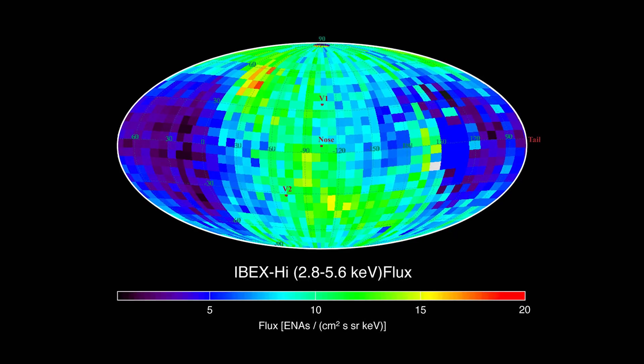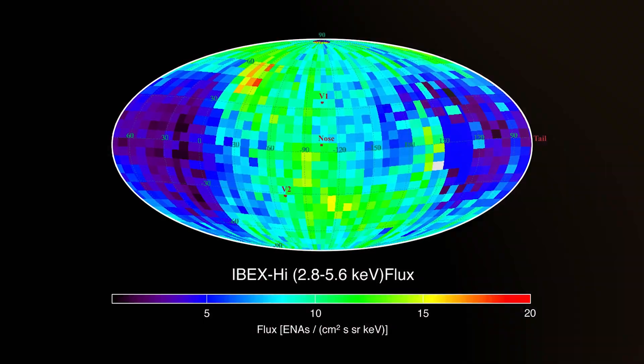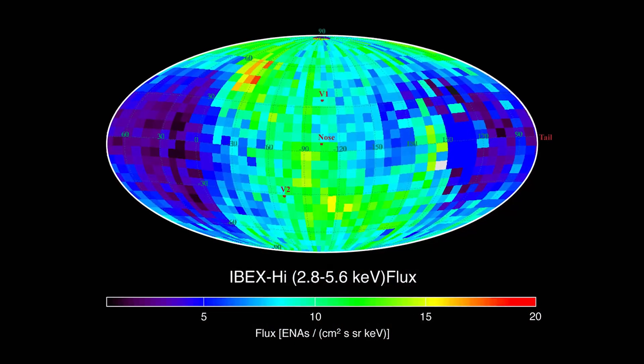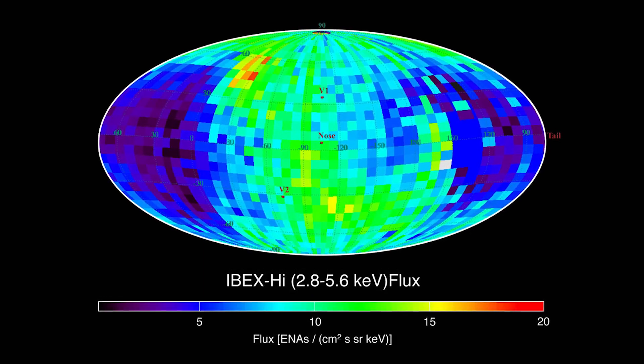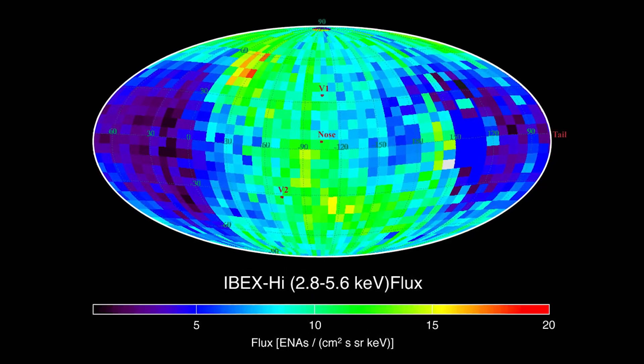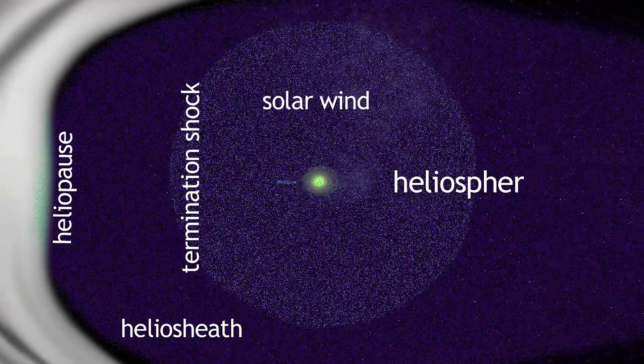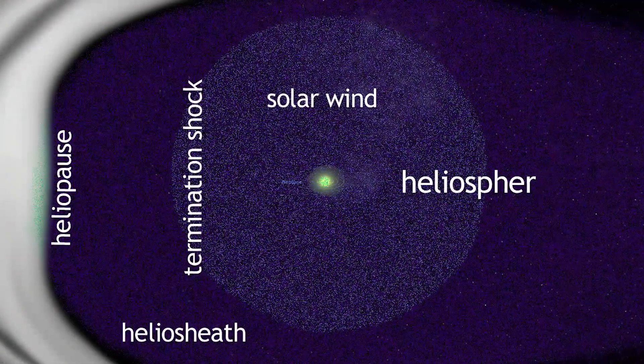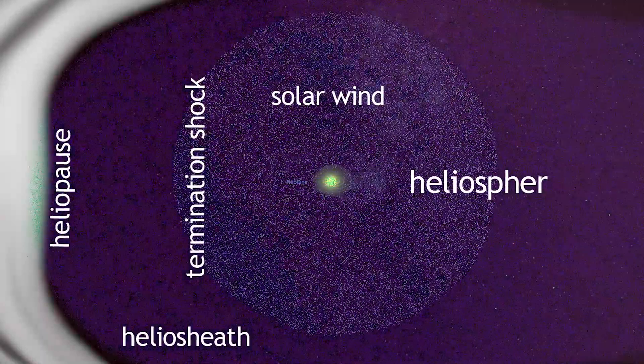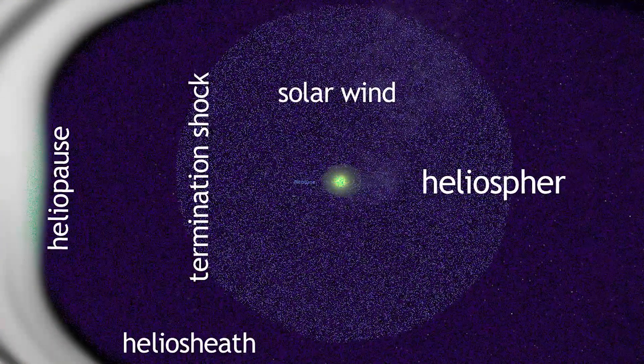IBEX ribbon is a band of intense energetic neutral atoms that extends along the heliosphere and is notably brighter than the neighboring atoms, presenting a contrast. Nonetheless, no one has yet provided a satisfactory explanation for the occurrence of the IBEX ribbon or its implications for current heliopause models.